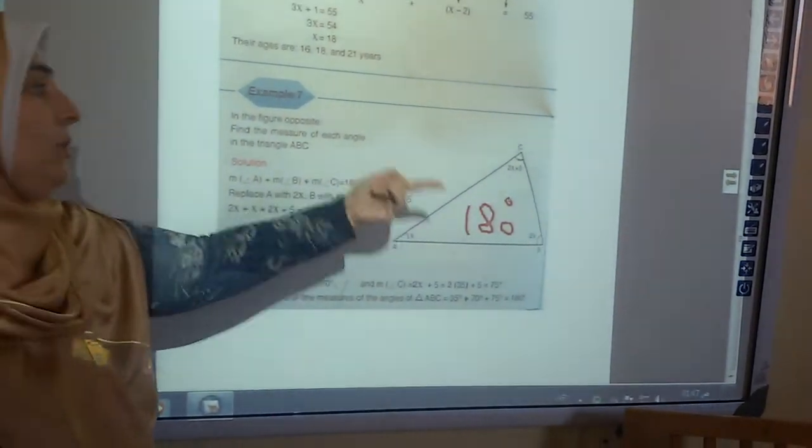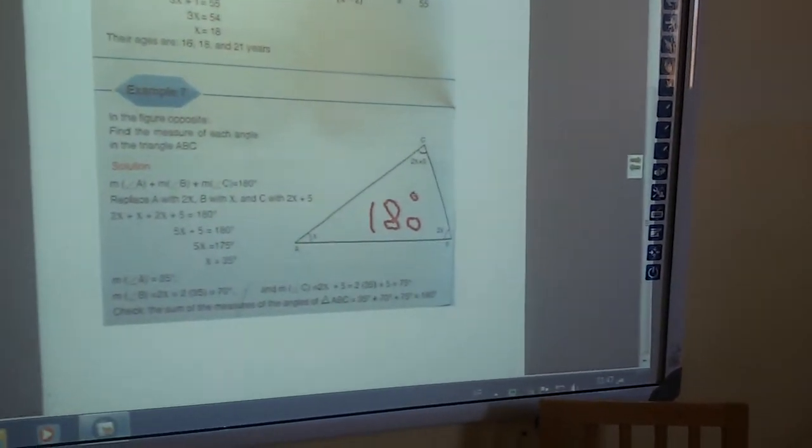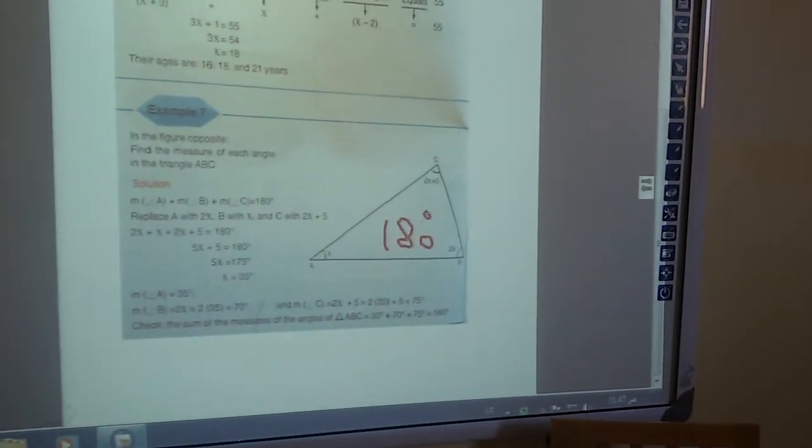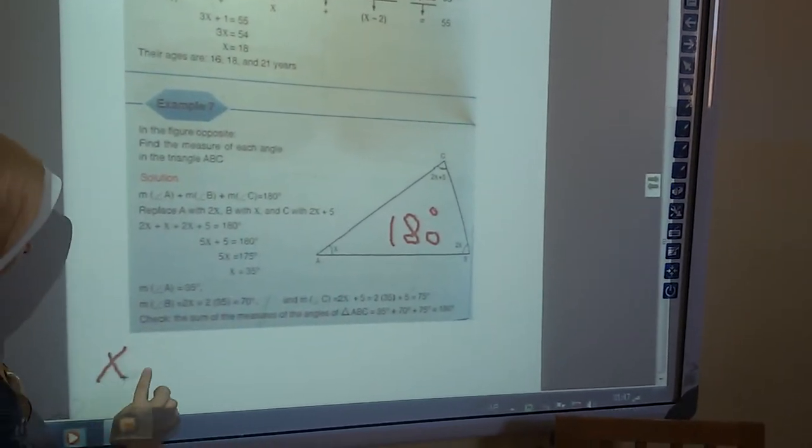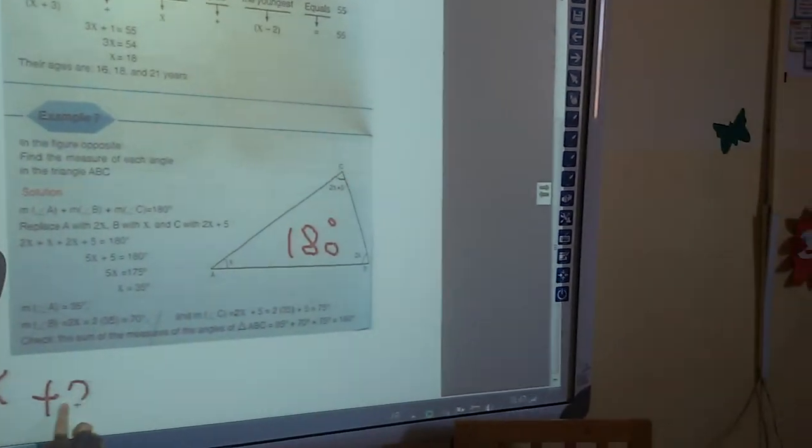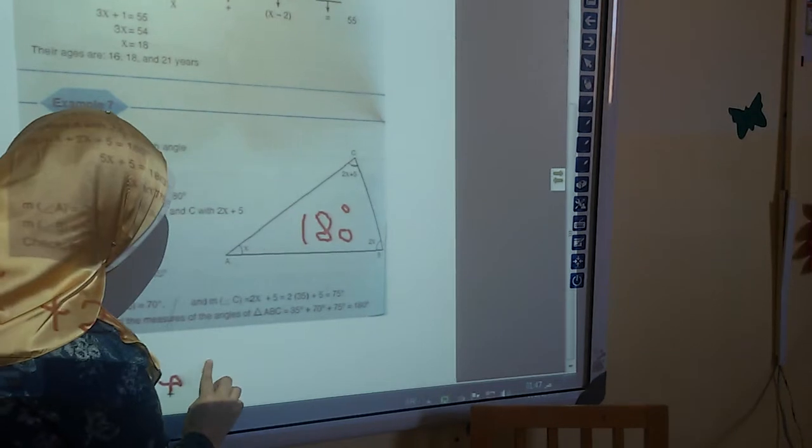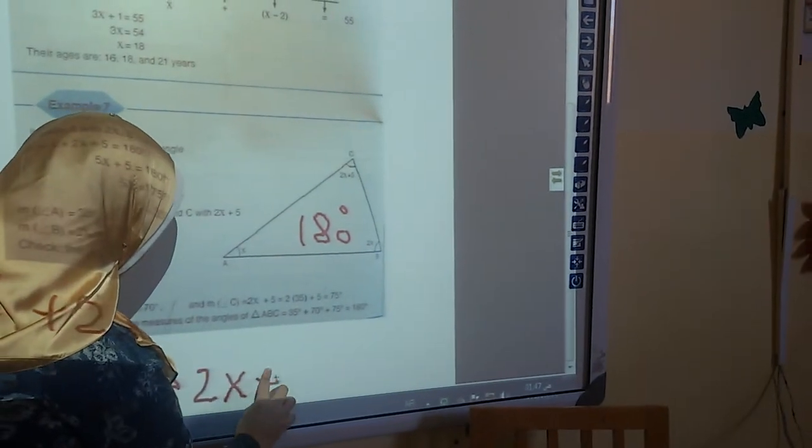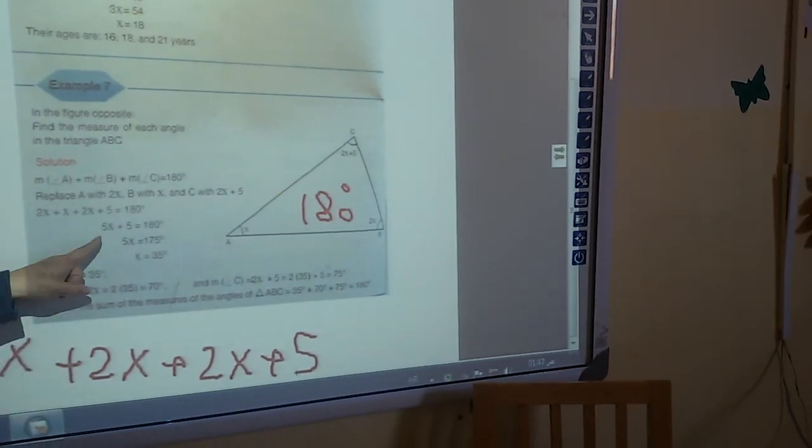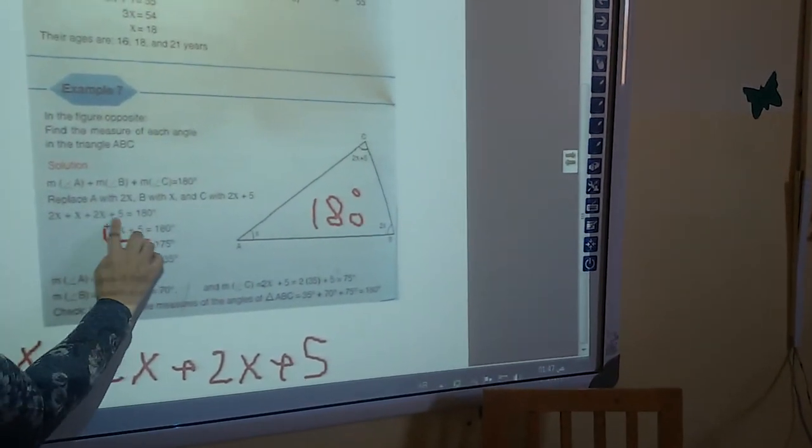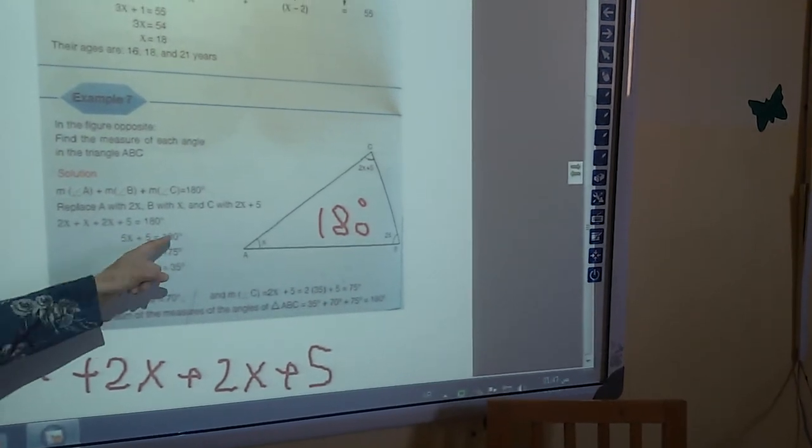But here I don't know the x. So I'm going to sum all the x's. So here, x plus 2x plus what? What is the third angle? 2x plus 5. I'm going to make the plus. It will give me 5x plus 5. 5x plus 5 equals 180.